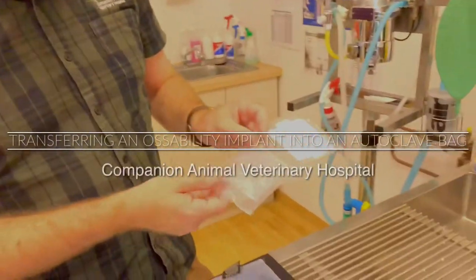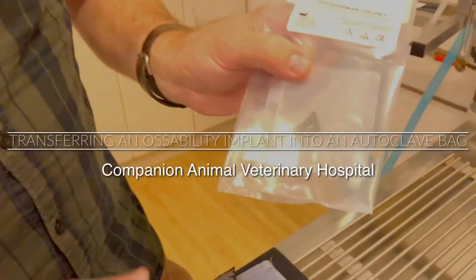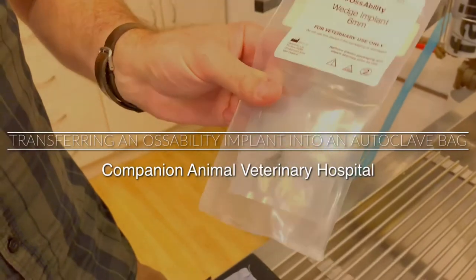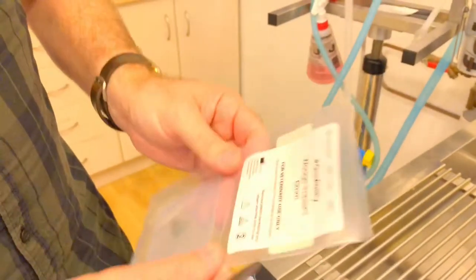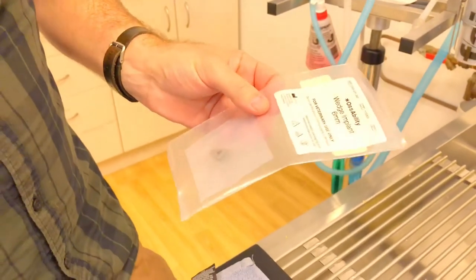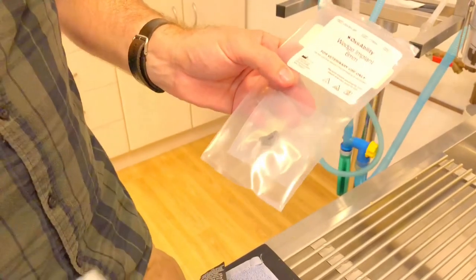This is an ossibility implant and they must not be touched by human hands. The way to get them out of the packet is to cut the packet and pour it into a small autoclave bag.